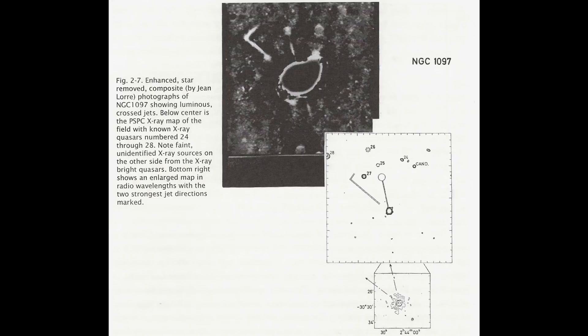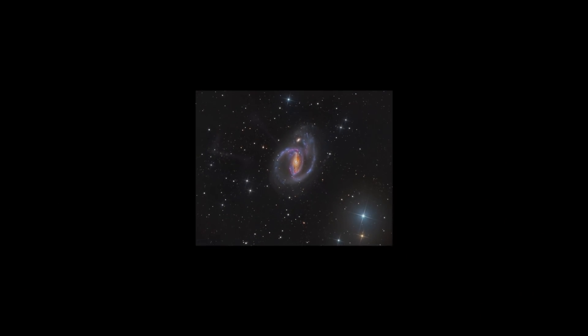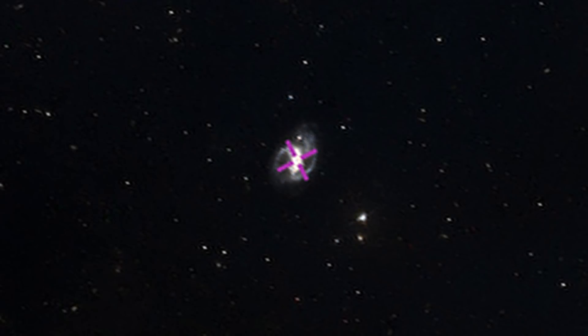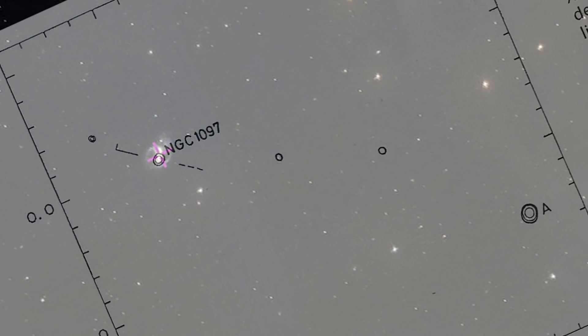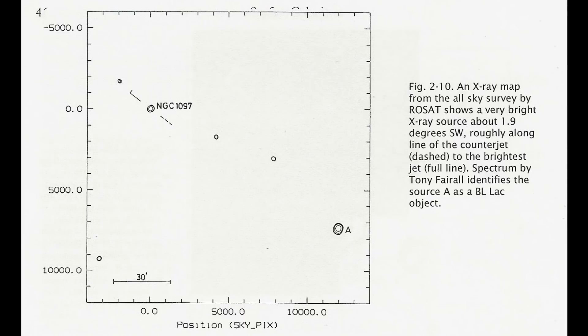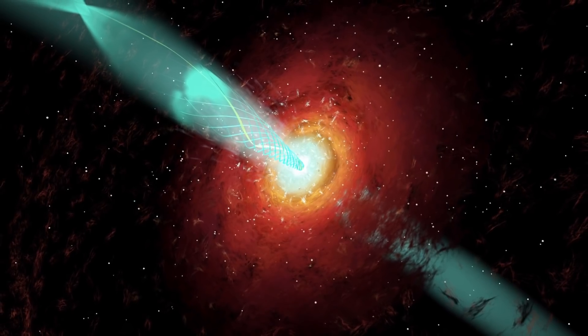This galaxy is very active in terms of ejecting material. Further examination of the X-ray images reveal a very strong X-ray source about 1.9 degrees to the southwest. It is identified as a BL-LAC object. This object is on a line of sources southwest from NGC 1097 which coincides very closely with the counter jets of the strongest optical jet to the northeast.